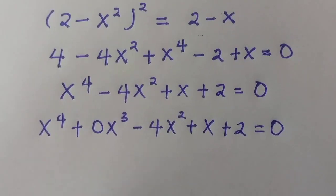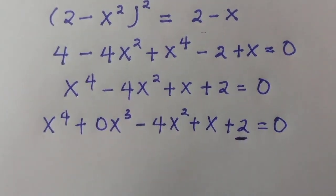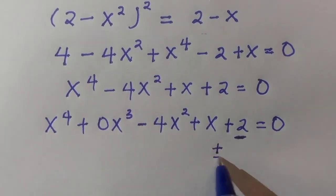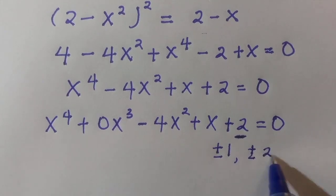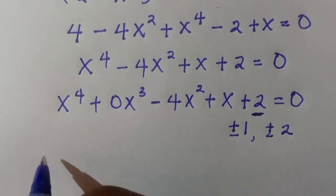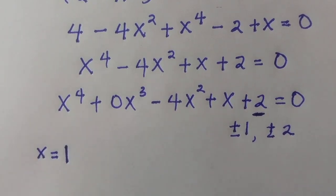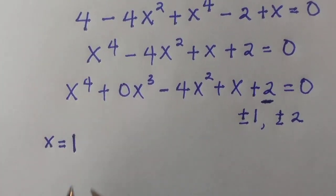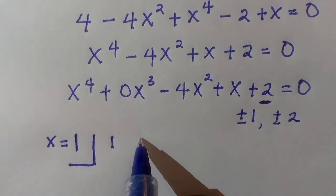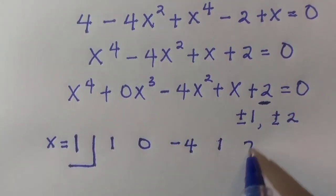This is now a complete quartic equation. We can solve this by applying synthetic division, considering factors of 2: plus or minus 1 and plus or minus 2. After testing, x equals 1 satisfies this. We take all the coefficients of the quartic: 1, 0, minus 4, 1, 2.